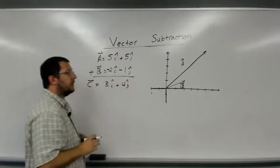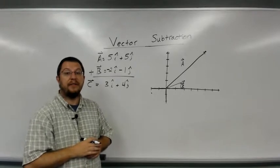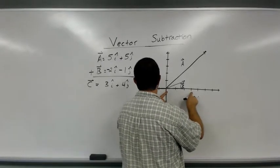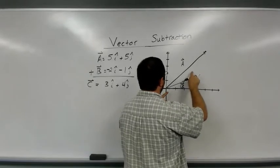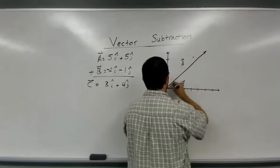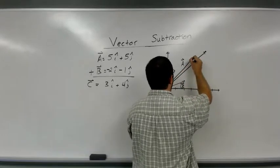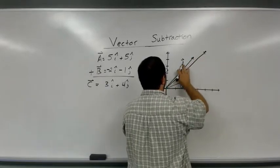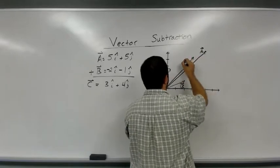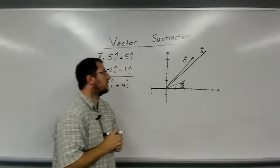So I can immediately plot these on my graph if I would like. So I'm going to have 1, 2, 3i and 1, 2, 3, 4j. And this is my new vector c or the resultant c.